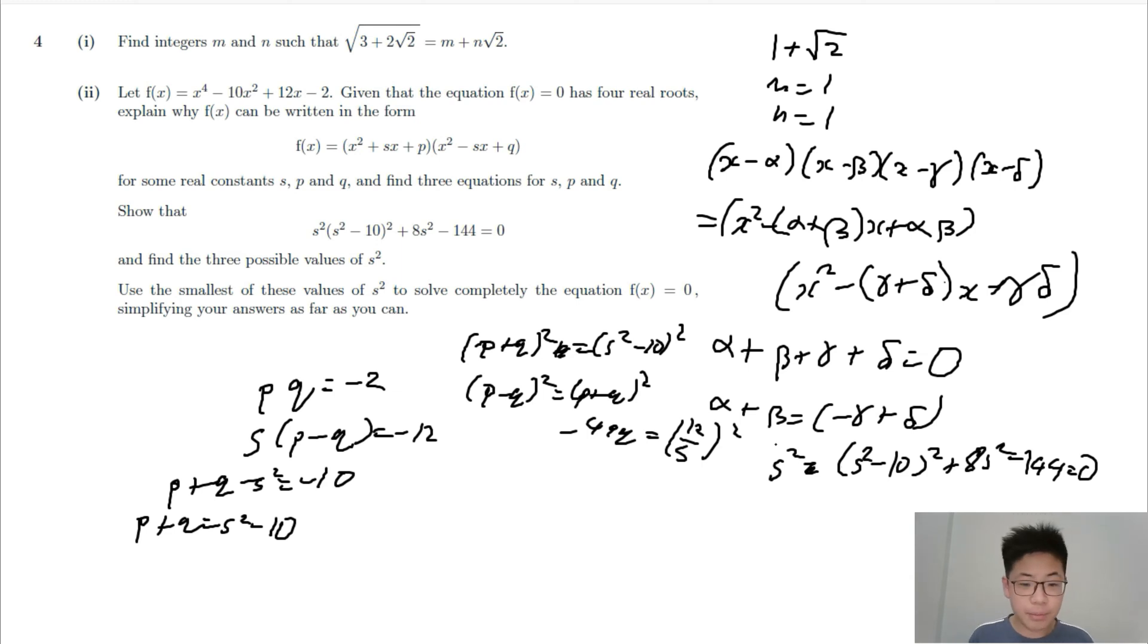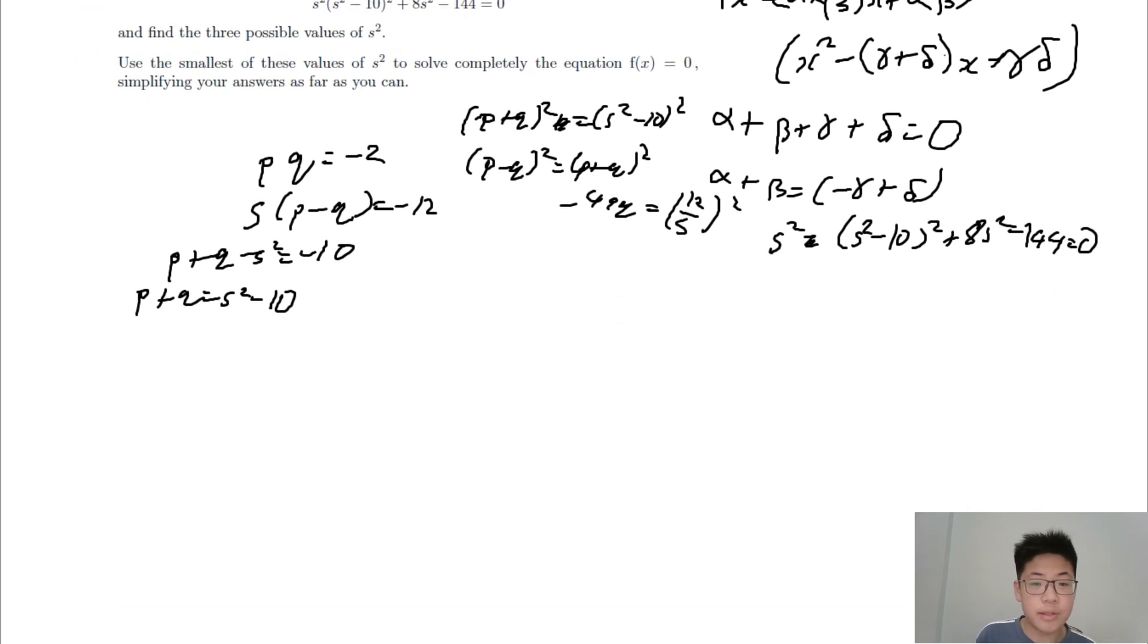And find the 3 possible values of s². So we are now going to substitute s² - 10. We will now have (s² - 10)³ + 10(s² - 10)² + 8(s² - 10) - 64 equals 0. Now, let this be u.